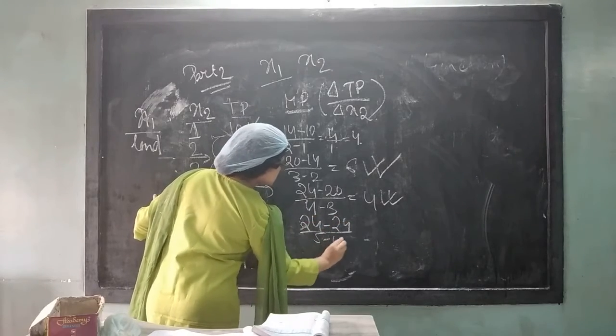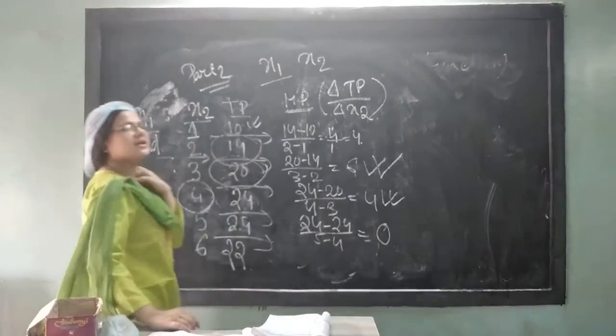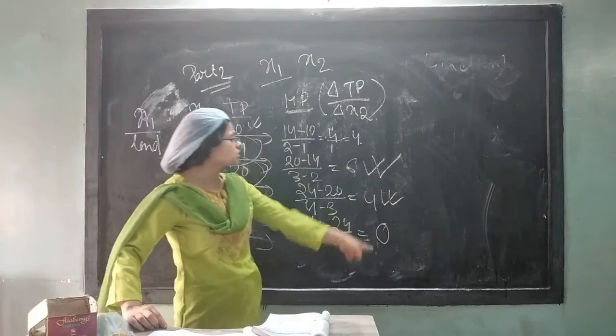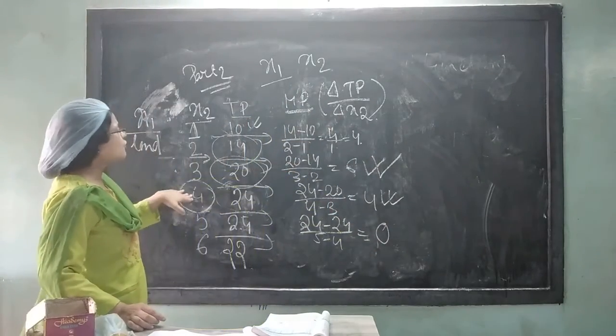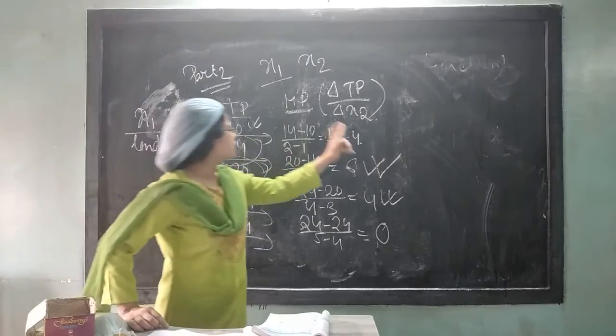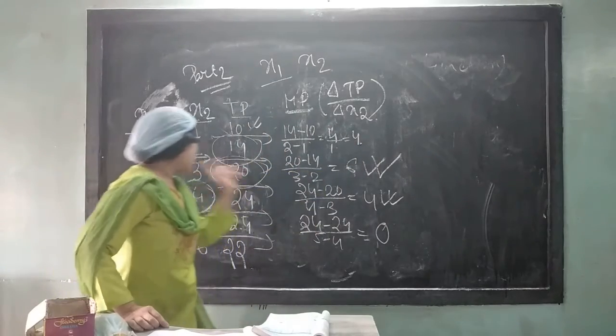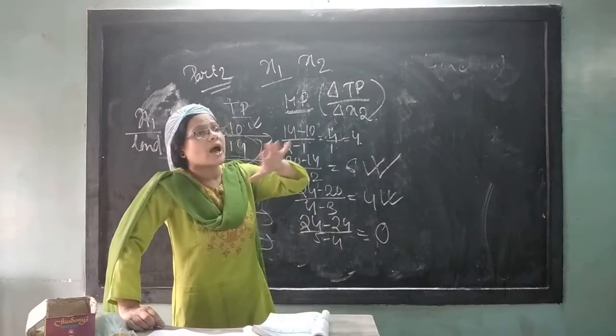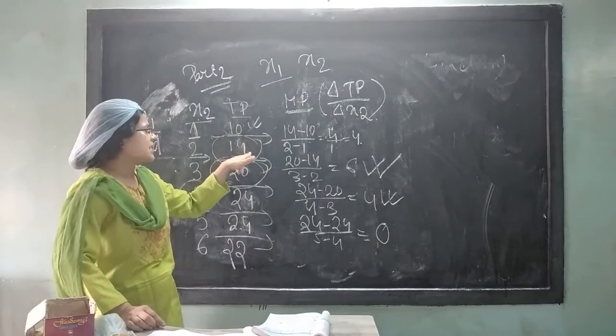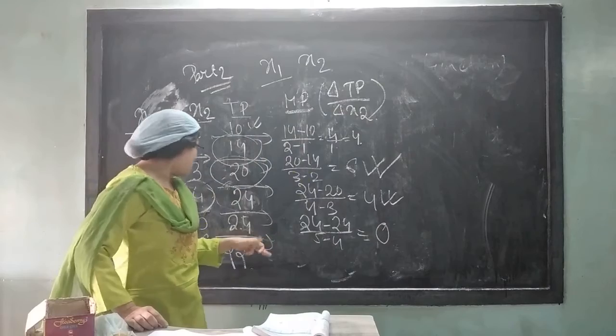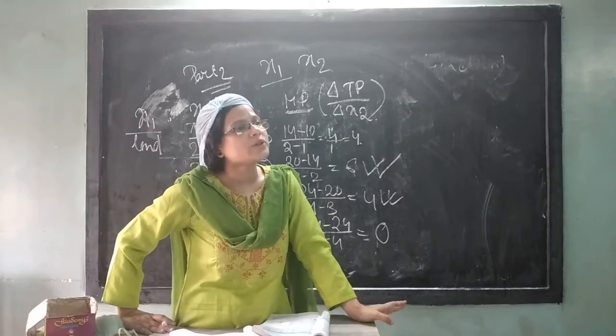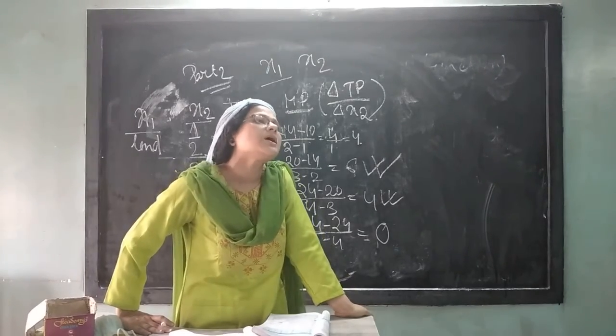So if there is no change in total production means its contribution towards total production is 0. But beforehand, up to 4th laborer, they have contributed. Then 1st laborer contributed 10, 2nd laborer contributed 4, 3rd laborer contributed 6, 4th laborer contributed 4. So the total production means the wages: 1st wages 10, 2nd wages 4, 3rd wages 6, 4th wages 24. Then whether the producer will employ 4 unit of laborers or 5 units of laborers that result will be same.